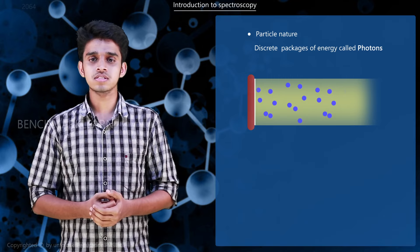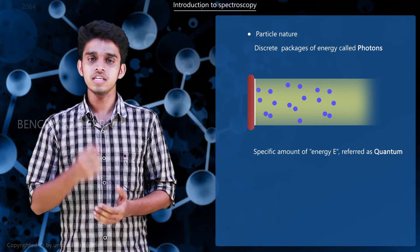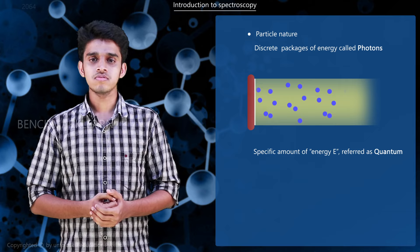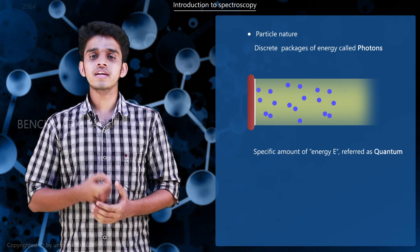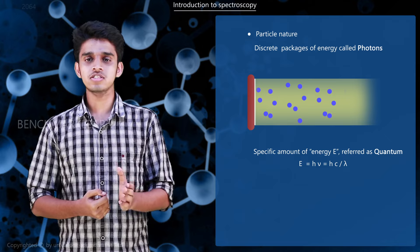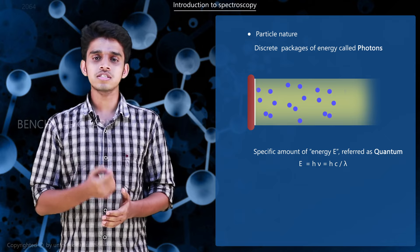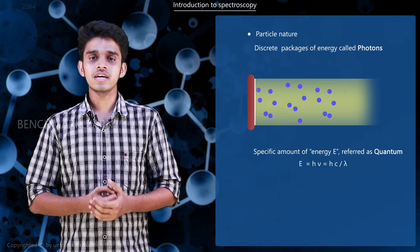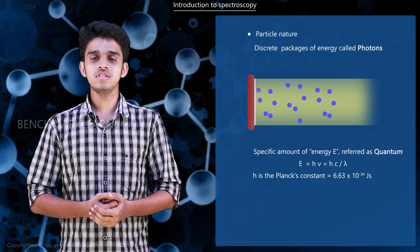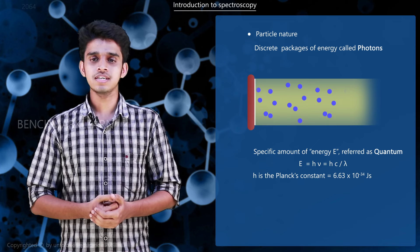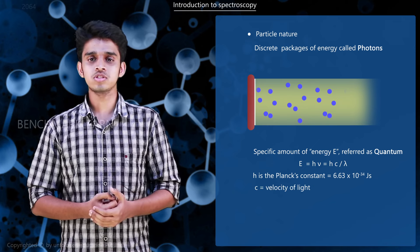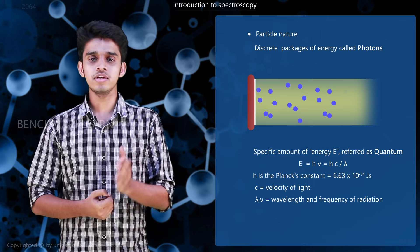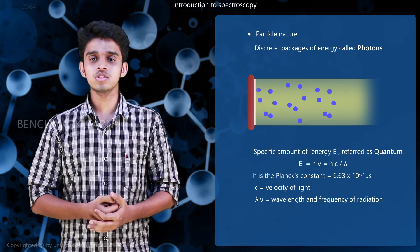Each photon possesses a specific amount of energy E, referred to as quantum, which is proportional to the frequency of emission. So we can write it as E = h × ν = h × c / λ, where h is Planck's constant equal to 6.63 × 10⁻³⁴ joules·second, c is the velocity of light, and λ and ν are the wavelength and frequency of radiation.